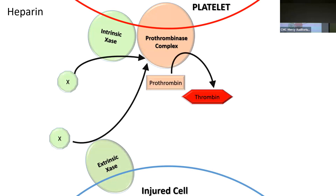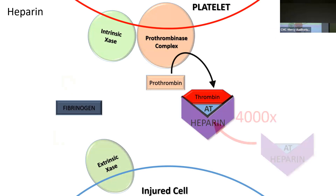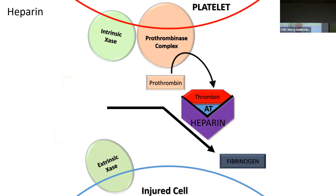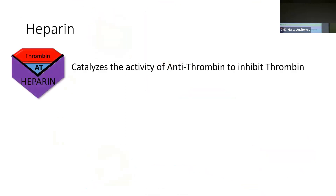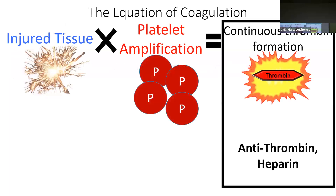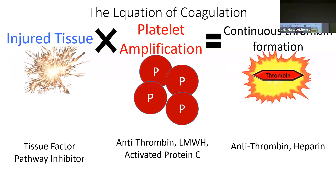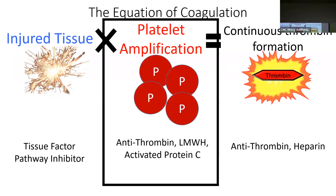Heparin acts as a catalyst for antithrombin, making it work much more efficiently at binding to thrombin in a dose-dependent manner. The clinical question often heard is: when do we stop heparin before surgery? The half-life of heparin in its IV form is about one to one and a half hours. After four to five half-lives, most of it is out of the system — so really in about four to six hours.